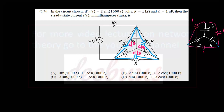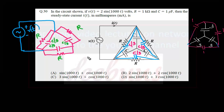Now the figure will be: resistance of value R in parallel with C/3. The same case must be in all the three arms. So the figure changes to R parallel with C/3, again R parallel with another C/3, and again R parallel with another C/3.